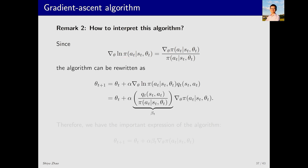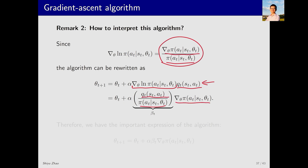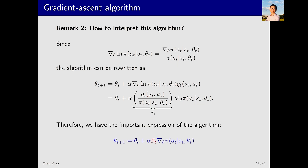Replacing the gradient of log pi with that expression and rearranging, we define a term beta_t. The update becomes: theta_{t+1} equals theta_t plus alpha * beta_t times the gradient of pi. Here alpha and beta_t together form the new step size.